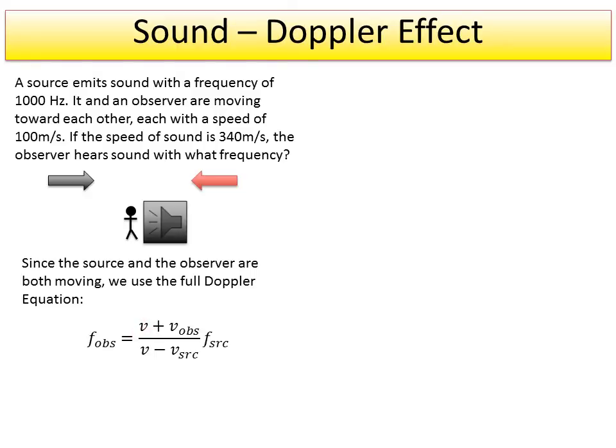So we have the speed of sound in two places, the velocity or the speed of the observer and the speed of the source, and the original frequency, the unmoving frequency.